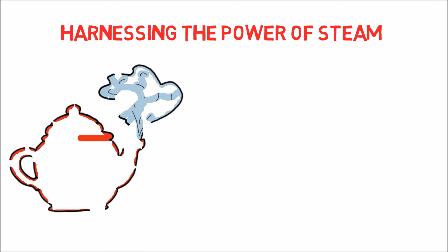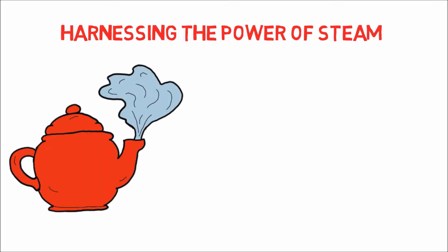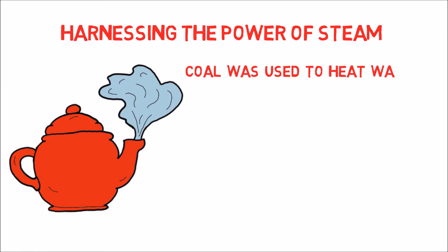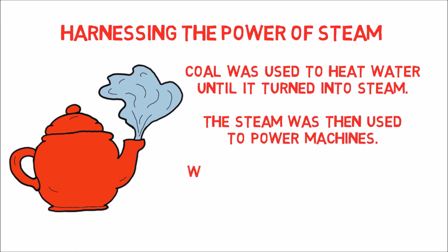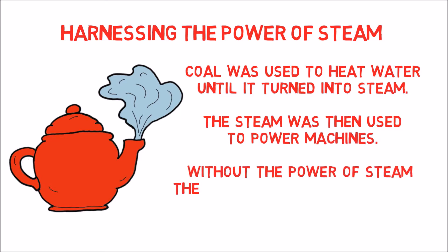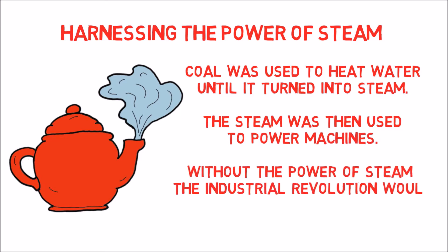Harnessing the Power of Steam. Coal was used to heat water until it turned into steam. The steam was then used to power machines. Without the power of steam, the Industrial Revolution would not have been possible.